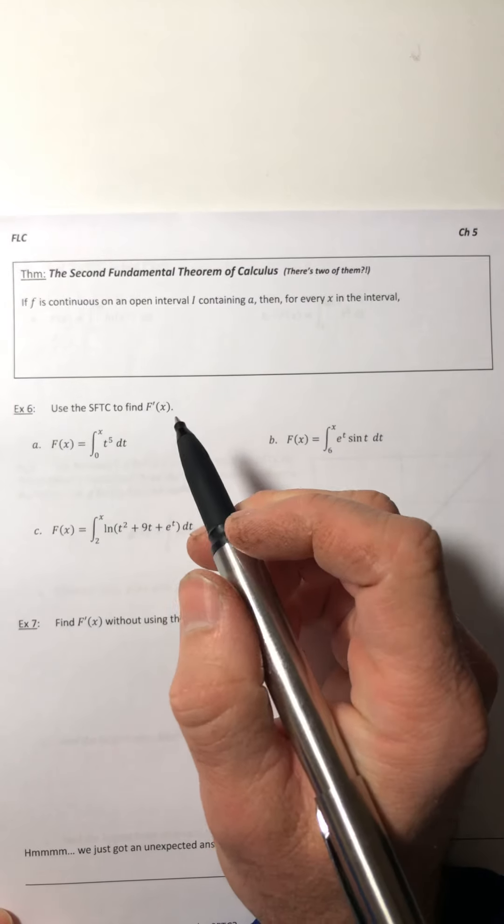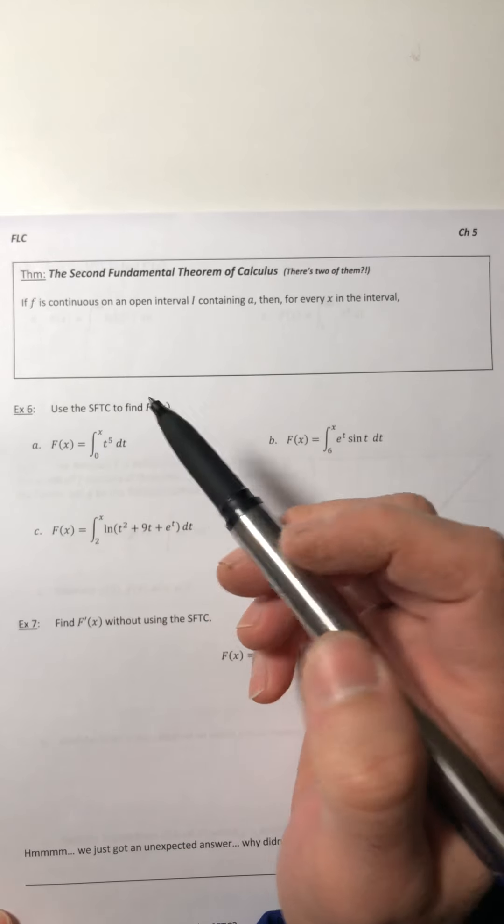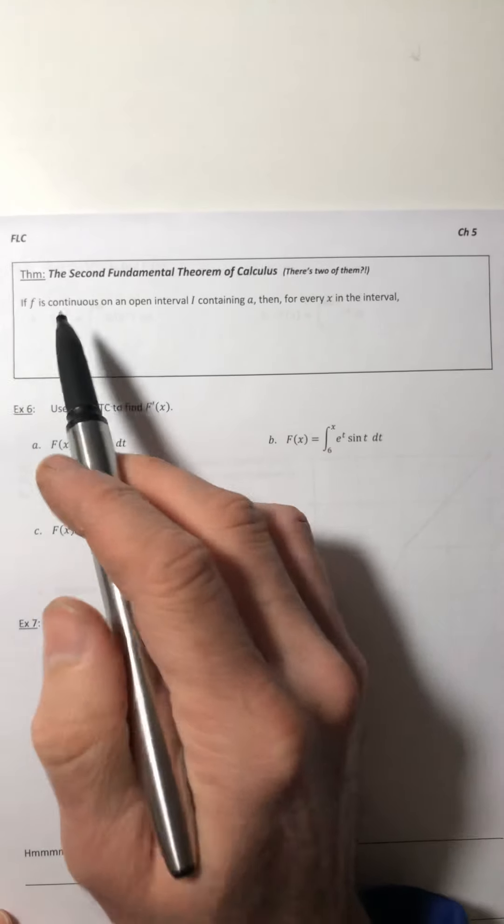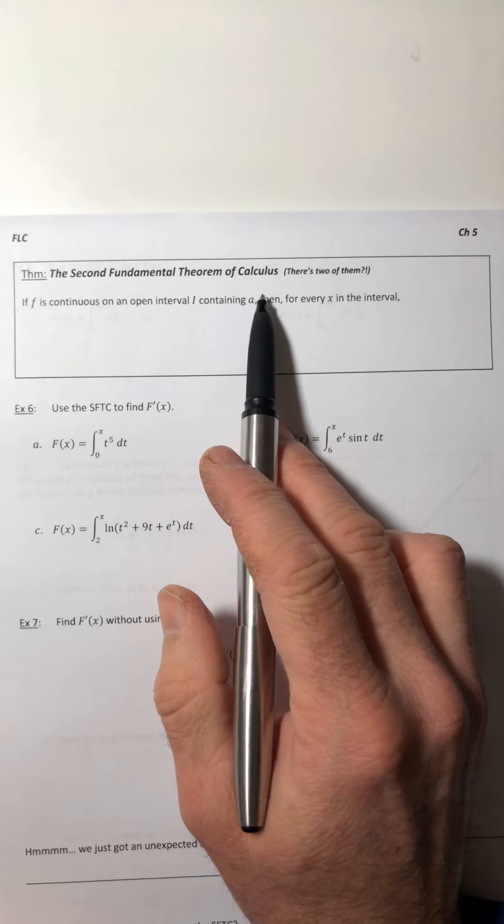Alright, in the last video we determined that a definite integral and a derivative are essentially inverses and they'll cancel each other out.